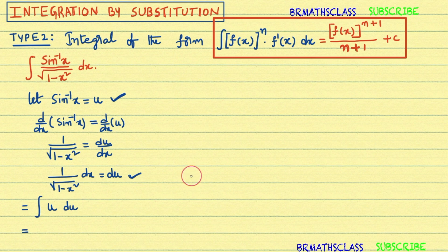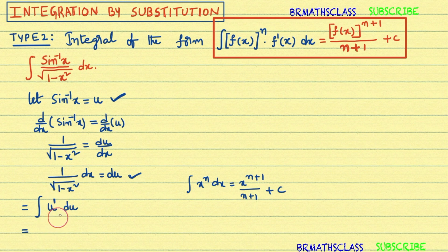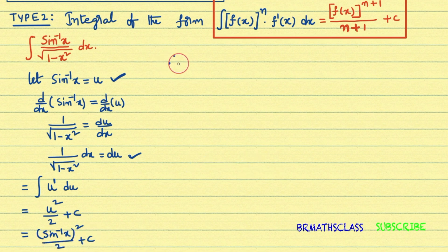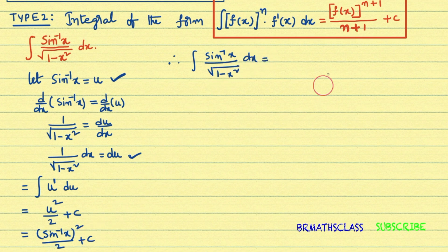We know the formula: integral of x power n dx equals x power n plus 1 divided by n plus 1 plus c. Here we have u power 1, so applying this formula gives u power 2 divided by 2 plus c. Substituting back, u equals sin inverse x, so the answer is sin inverse x whole square divided by 2 plus c. Therefore, the integral of sin inverse x divided by root over 1 minus x square dx equals sin inverse x whole square divided by 2 plus c.